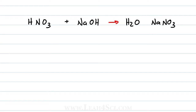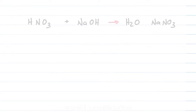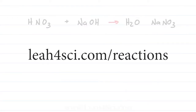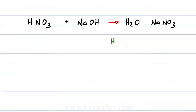You can balance this the same way taught in the other balancing videos on leah4sci.com/reactions, where we write a checklist down the middle for all of the atoms present in the reactants and products. The problem is similar to what we saw in the last video on balancing combustion, where an atom that shows up in more than one place can be very confusing.